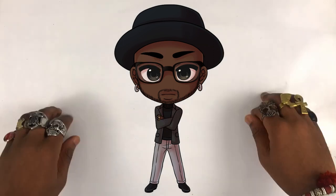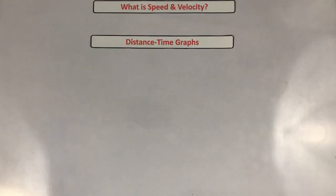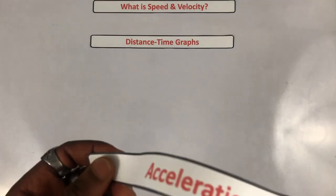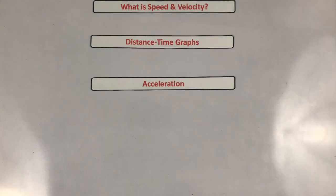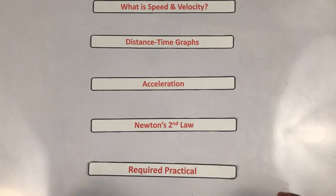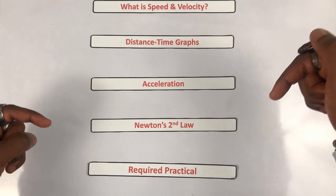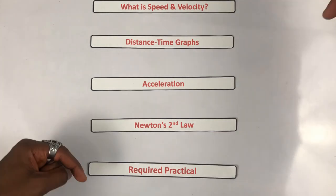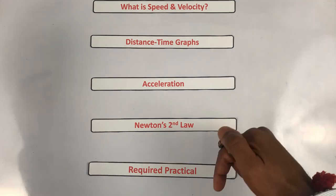It's Uncle Jegs, and today's video is all about the acceleration required practical. We'll be looking at the differences between speed and velocity, distance-time graphs including how to calculate speed from them, acceleration including velocity-time graphs, how to calculate acceleration from them, how to work out distance traveled in a velocity-time graph, and Newton's second law of motion before the required practical itself. Check out the timestamps below to skip to what you need and download today's worksheet.